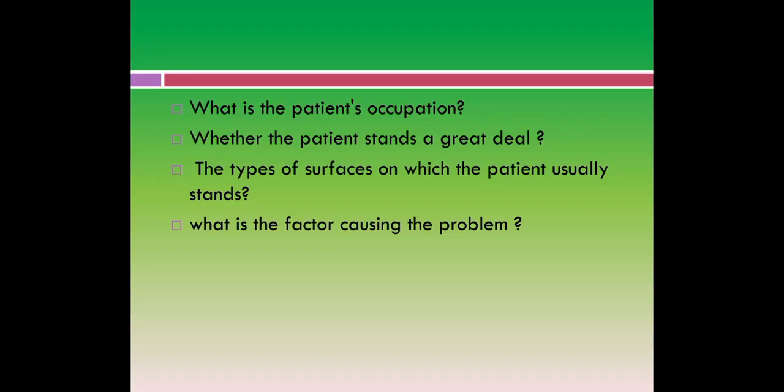In history taking, when we are taking history from a patient who is having an ankle joint injury, the first question we must ask is the patient's occupation — whether the patient stands for a longer period of time, what type of surface they are standing on, and what factor is causing the problem. The occupational history can tell us whether prolonged standing posture can cause the pain.